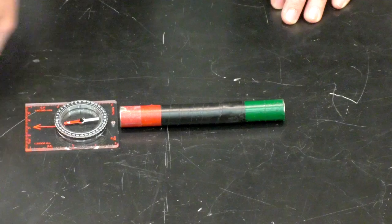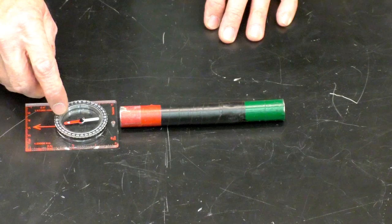The direction that the compass needle points, the red part of it, is the direction of the magnetic field. And just so you understand how it works,